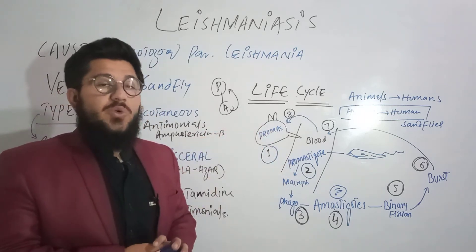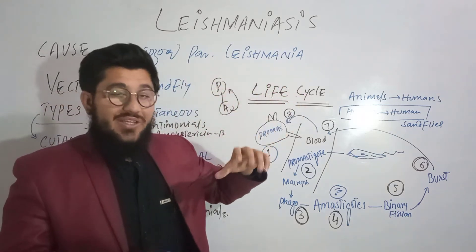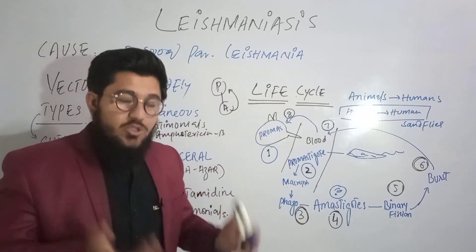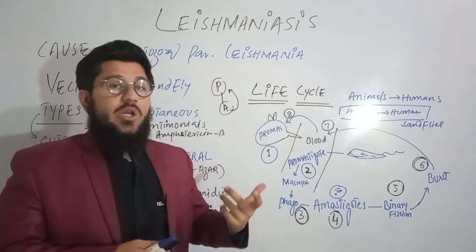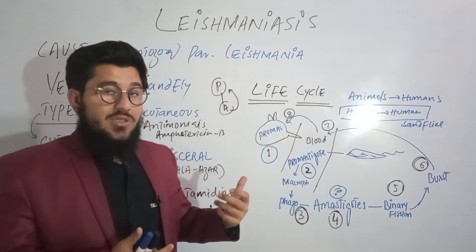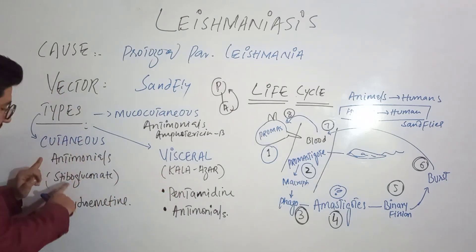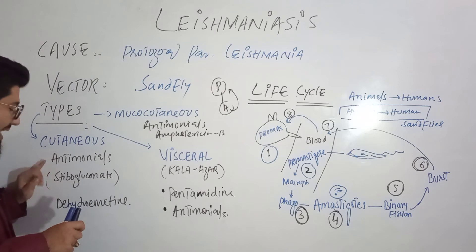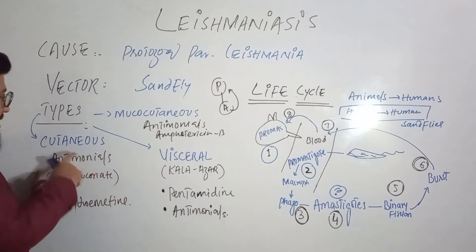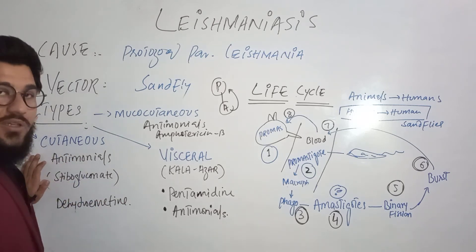Now let's move to the drugs used to treat Leishmaniasis — the anti-leishmanials — which is the pharmacology for Leishmaniasis. The drugs include antimonials like sodium stibogluconate, and dehydroemetine. These are the drugs used to treat cutaneous Leishmaniasis.